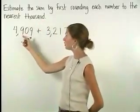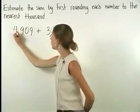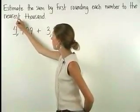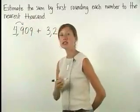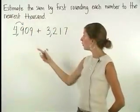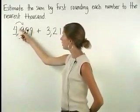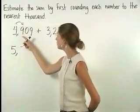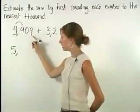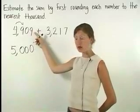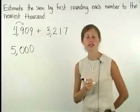In 4,909, notice that 4 is in the rounding position. So we look at the digit to the right of 4. Since there's a 9 in this position, we round up, which means that we add 1 to the 4 in the rounding position to get 5 and change all the digits to the right of the rounding position to zeros. So 4,909 rounds up to 5,000.